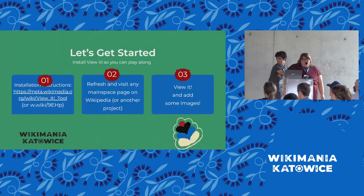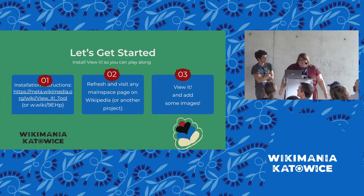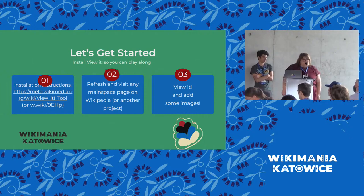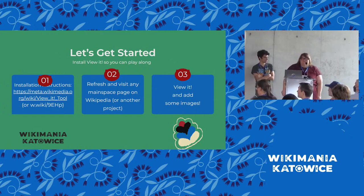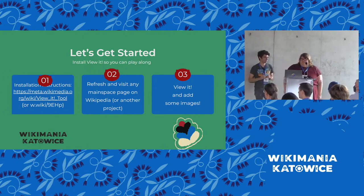Part of the reason why we have 40 minutes today is my hope is that we could do some editing together. I realize it's a little difficult since we don't have a table or anything, but hopefully you'll join us. Installing ViewIt is very easy. You can follow the installation instructions on Meta, which is where we document the creation of ViewIt. Once you follow the installation instructions and apply it either in your home language Wikipedia or globally, refresh the page and you should start to see it with any page you look at.